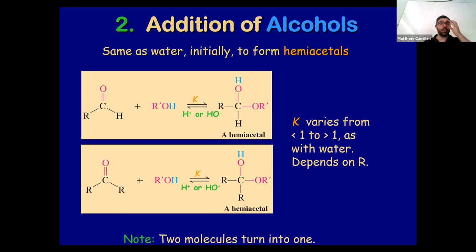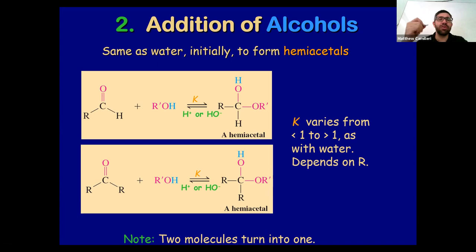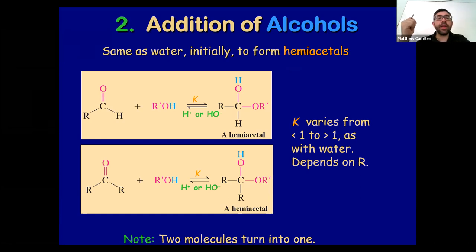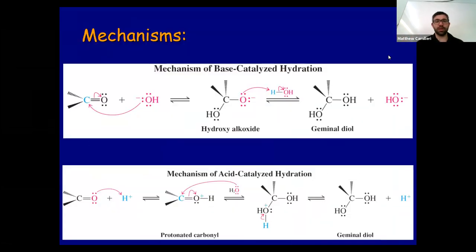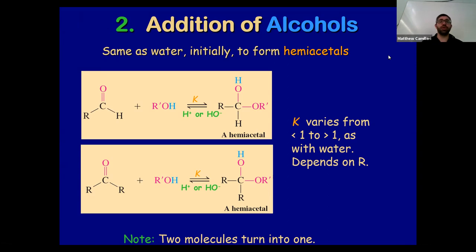Continuing on carbonyls — previously we were adding water. Today we're going to be adding alcohol. Same as water, it initially forms a hemiacetal. A hemiacetal is when you have C single bond O and C single bond O. The rate here can be either smaller or bigger than one because this is very dependent on the R groups. This can be either acid or base catalyzed. If acid catalyzed, you first protonate the carbonyl; if base catalyzed, you start by addition of the nucleophile, opening up the C double bond O.